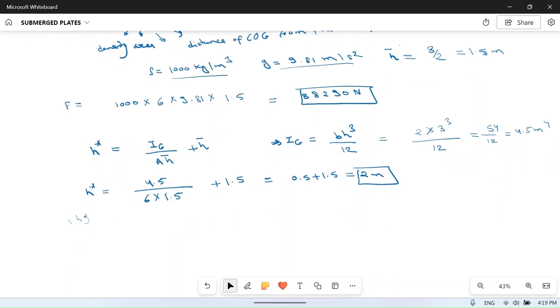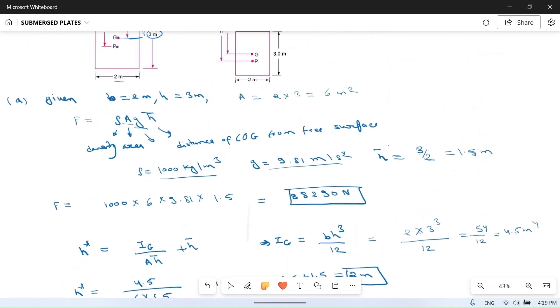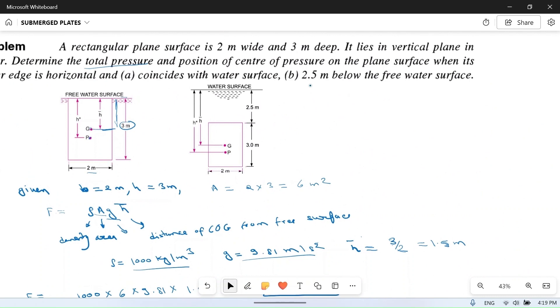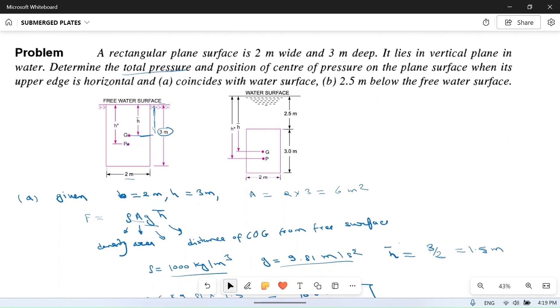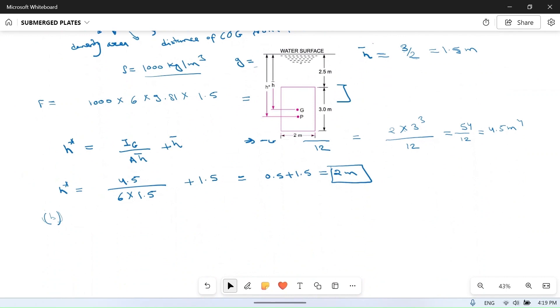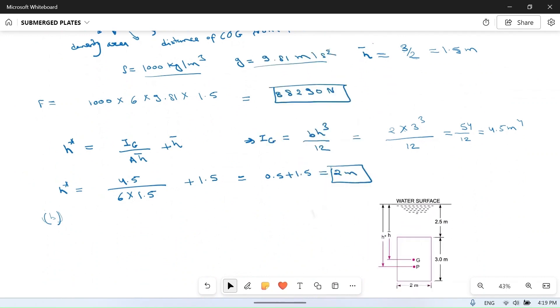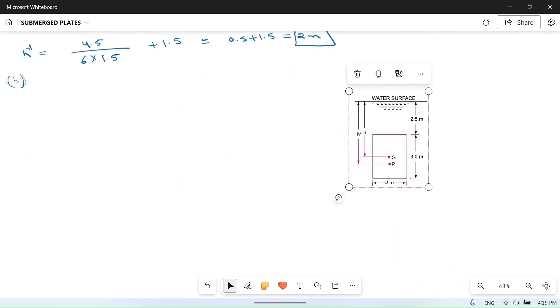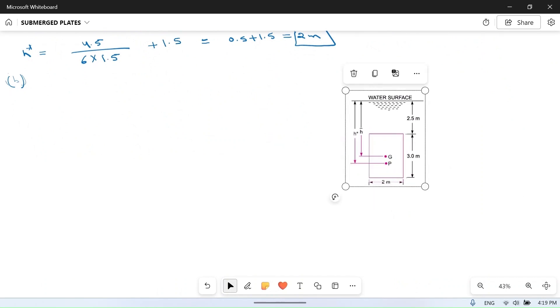Now what is the second case? Let's look at the second case. Second case is part (b) when its upper edge is 2.5 meter below the free surface. So we'll put this image here so we can see that this upper edge is 2.5 meter. So free surface of water is 2.5 meter above the edge of the plate.